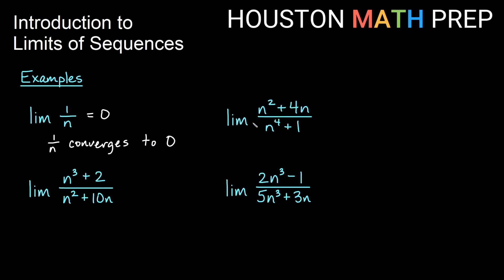Going straight across, we have the limit of n squared plus 4n over n to the 4 plus 1. You may look at this and say it's indeterminate — we'll cover that in our next video. But using your knowledge from pre-calculus with rational functions: if you have a higher degree on the bottom than on the top, you're going to have a horizontal asymptote at 0. So since we have a higher degree on the bottom, without using L'Hôpital's rule, this limit is also 0 — this one also converges to 0.